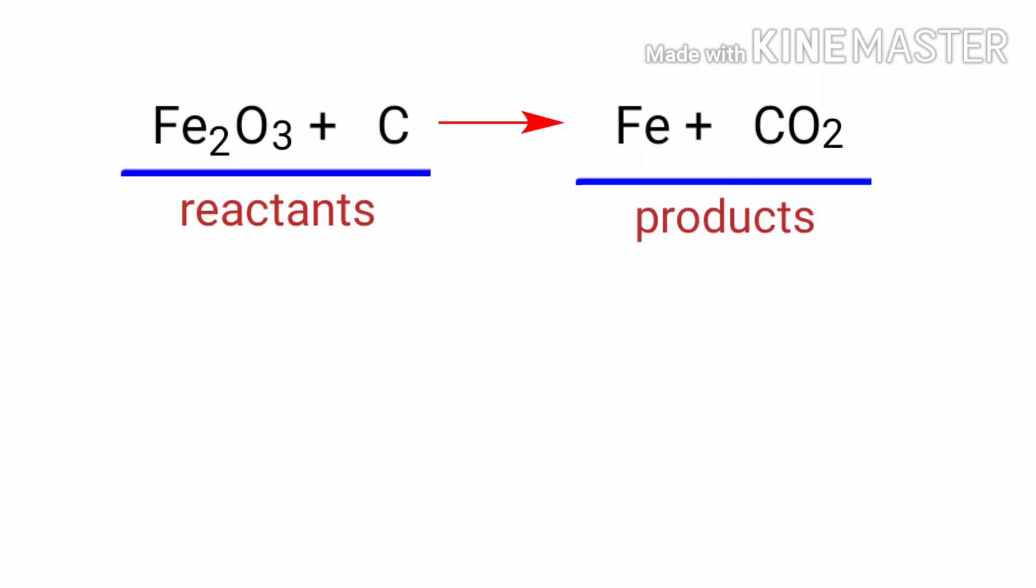In this equation, the reactants are ferric oxide and carbon, and the products are iron and carbon dioxide. If you look at this equation, the equation is not balanced.